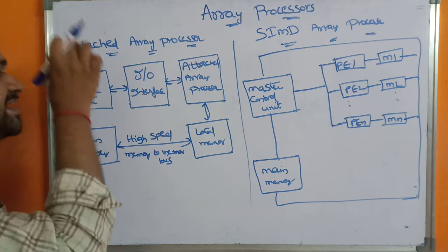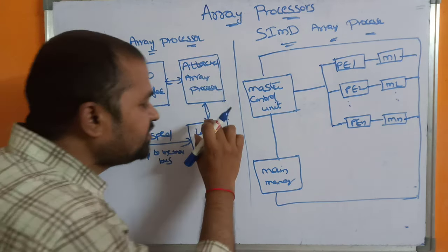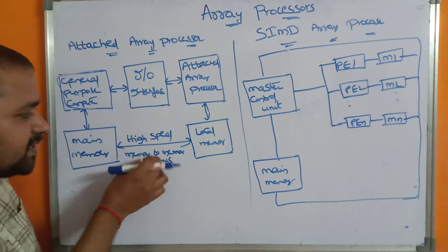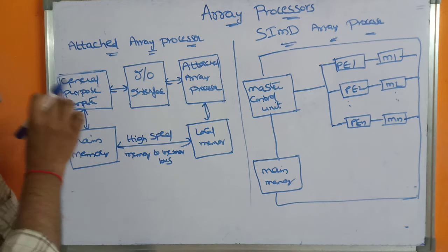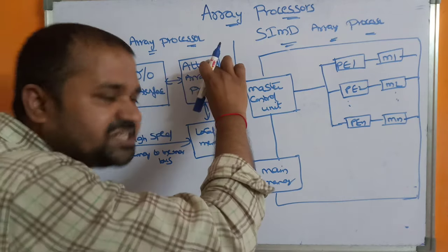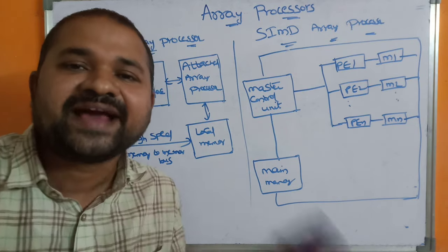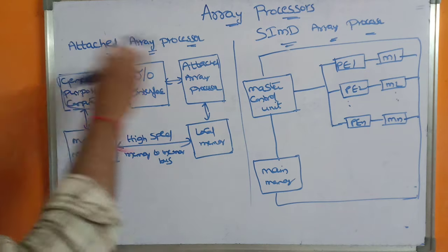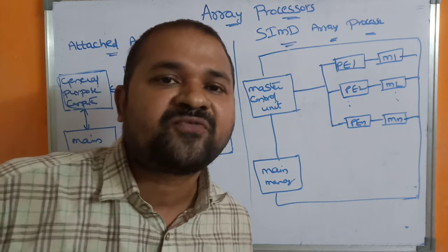Next, we have main memory. The contents of the general purpose computer will be stored in the main memory, and the contents of the attached array processor are stored in the local memory. If there are a vast number of instructions, then from the main memory, we use a high-speed memory-to-memory bus to transfer all those instructions to the local memory. This attached array processor will execute those vast number of instructions. Once execution is completed, the results are transferred back to the main memory via the high-speed memory bus. We use the attached array processor mainly to improve the performance of a computer.